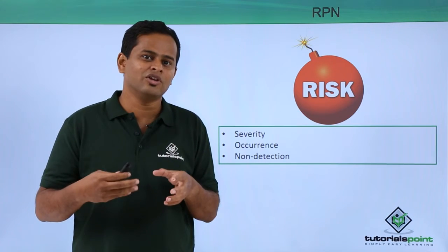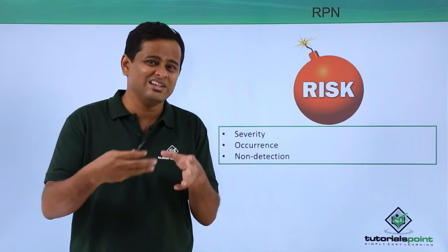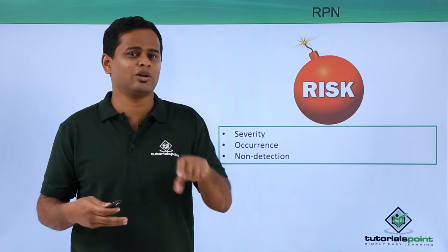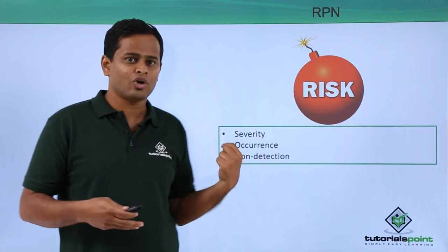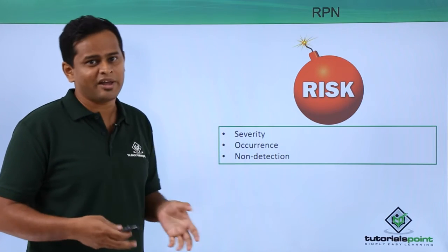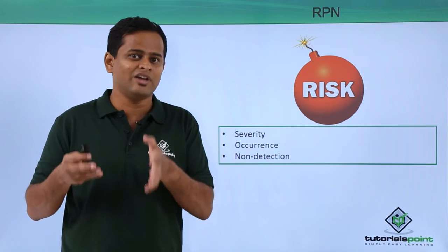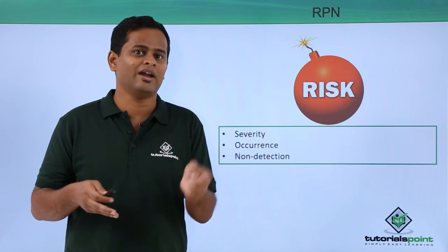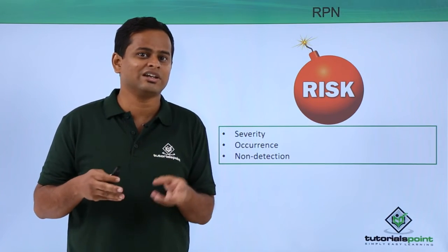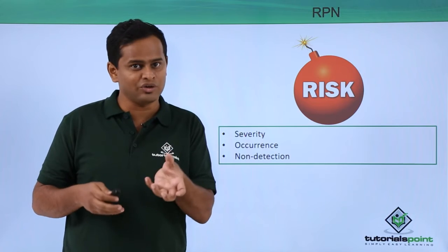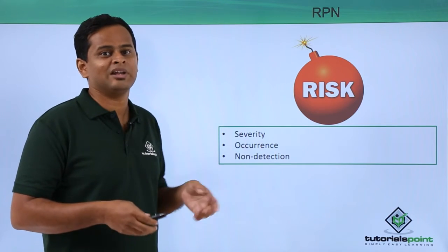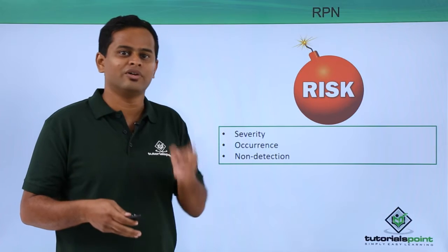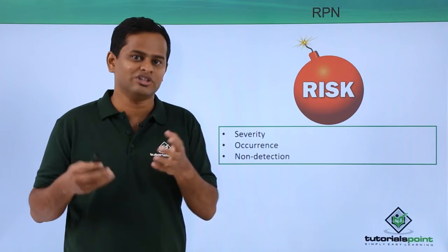Detection: if you can easily detect that particular thing, the values will be very close to 1. For all three parameters, the value can vary between 1 to 10, and the important thing is it can never be 0. The multiplication of all three gives you the Risk Priority Number.